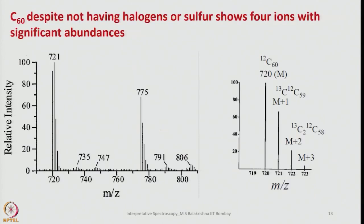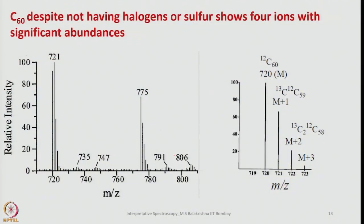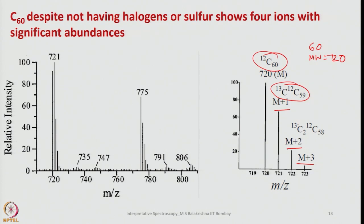Let us look at fullerene C₆₀. Despite not having halogens or sulphurs, it shows 4 ions with significant abundances. The parent peak — since it has 60 carbons, molecular weight is 720 — is split as M at 720, M+1, M+2, and M+3. The combinations are: 100% for M, ¹³C/¹²C contributions for M+1, ¹³C₂/¹²C for M+2, and ¹³C₃ for M+3.